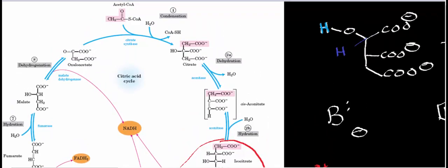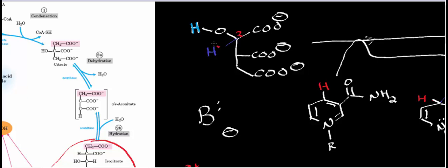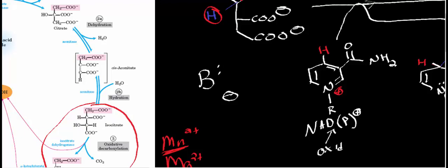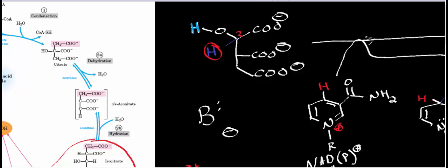Starting with isocitrate: notice it has a hydroxyl group at position 2, and also at position 2 there is a hydride. That hydride is what's going to give us our electrons in the form of NADH. The NAD-plus — or NADP-plus, as this enzyme can react with both — starts in the oxidized form. A base in the active site of isocitrate dehydrogenase performs a proton transfer, and when the oxygen is deprotonated, a carbonyl bond forms and ejects the hydride.